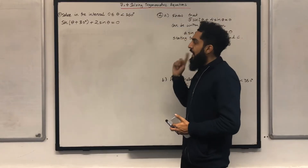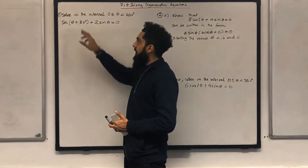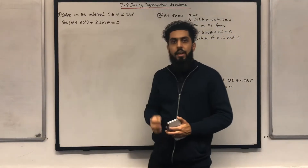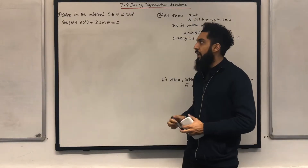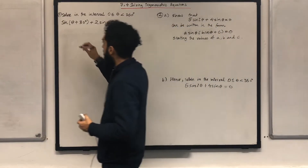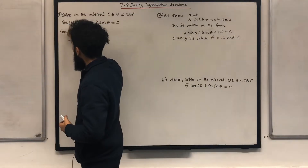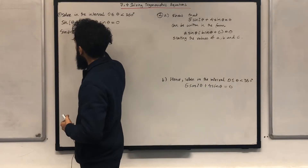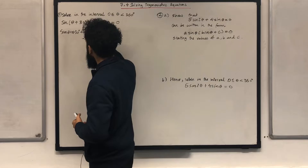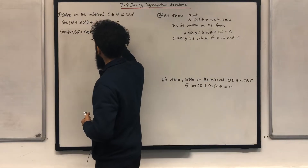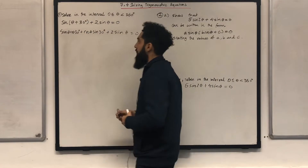The angle that I have inside the sine is theta plus 30 degrees, so I can expand the sine using the addition formula for sine a plus b. If I do that, I obtain: sine theta cos 30 degrees plus cos theta sine 30 degrees plus 2 sine theta equal to 0.